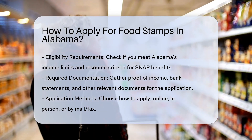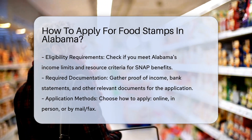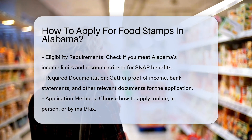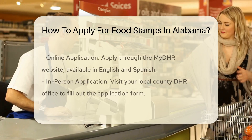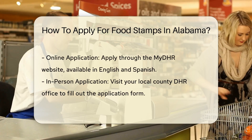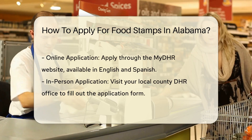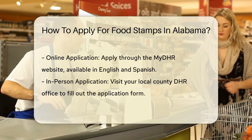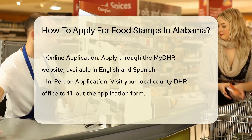Gather required information. When applying, you should bring proof of income, bank statements, rent or house payment proof, and medical expenses if applicable. Your food stamp worker will provide a list of necessary information during the interview.